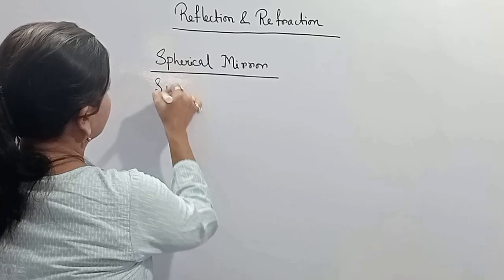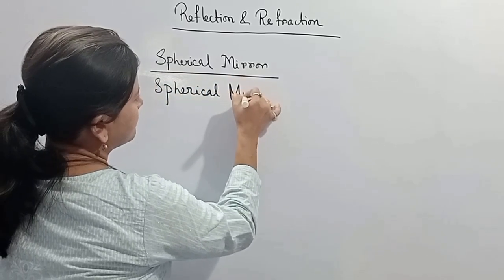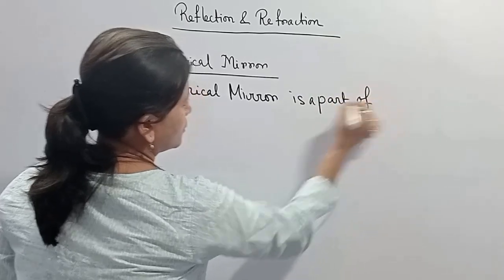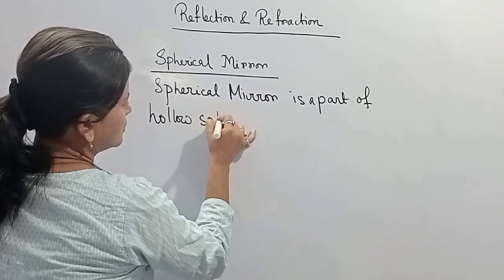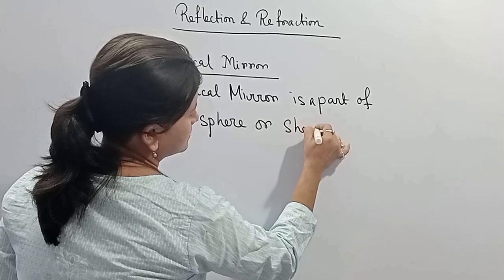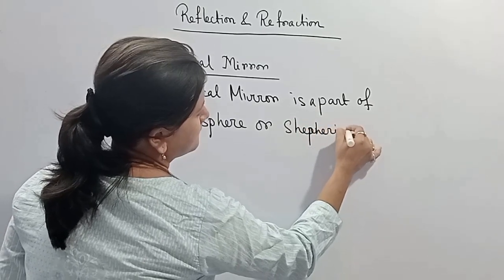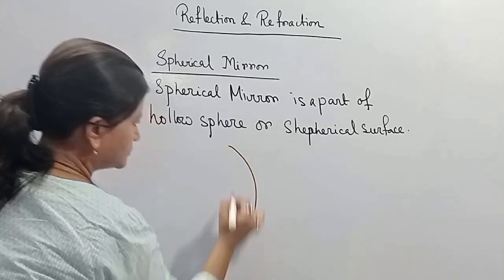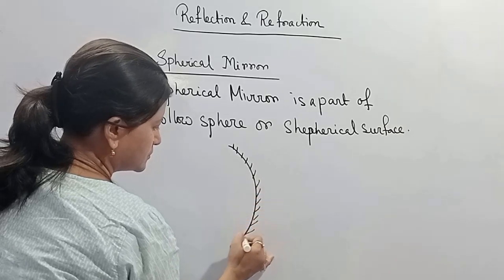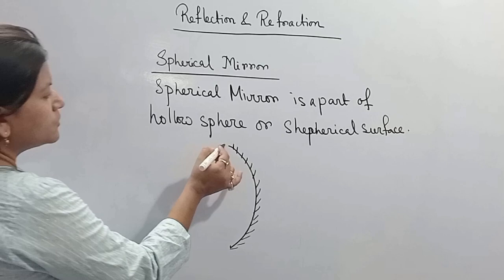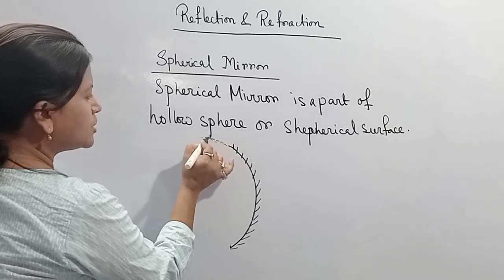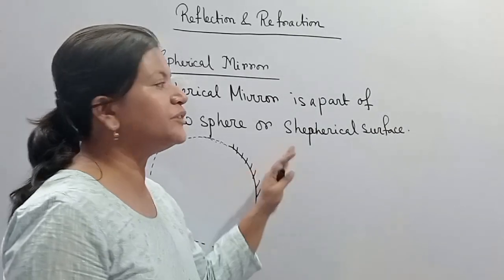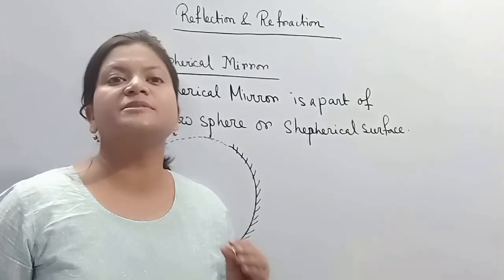What is a Spherical Mirror? A spherical mirror is a part of a sphere's surface. From this picture we can see that it is a piece cut out from a sphere. It is a part of a sphere, that's why this type of mirror is called a spherical mirror. So a spherical mirror is generally a part of a sphere.